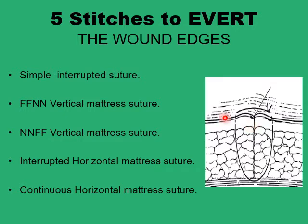I'll go through five different types of stitches that can produce this type of eversion of the wound edges: a simple interrupted suture, a far-far near-near vertical mattress, a near-near far-far vertical mattress, an interrupted horizontal mattress, and a continuous horizontal mattress. We'll go through them one by one.